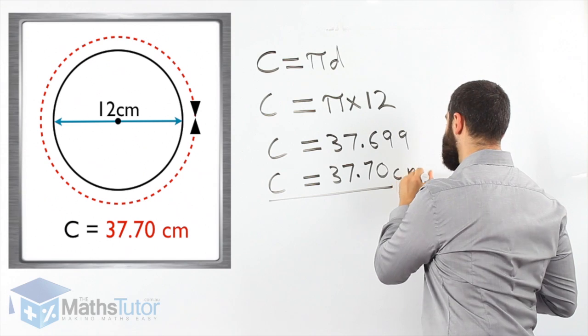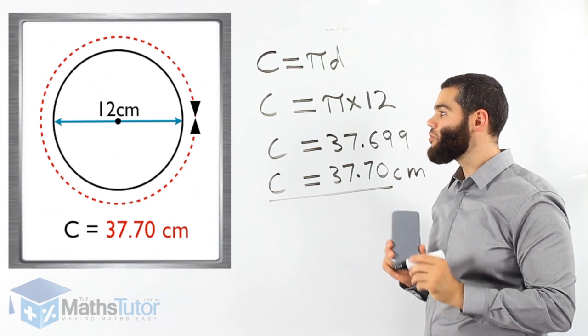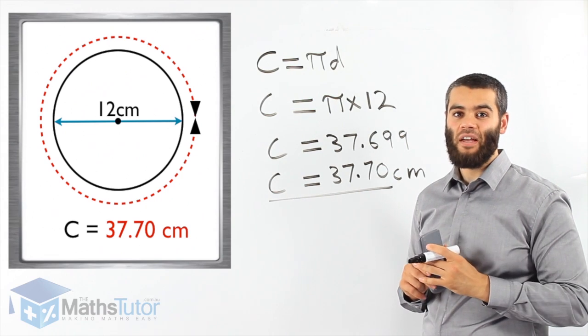And of course we write our units, centimeters. This is our answer to two decimal places. Let's do another example.